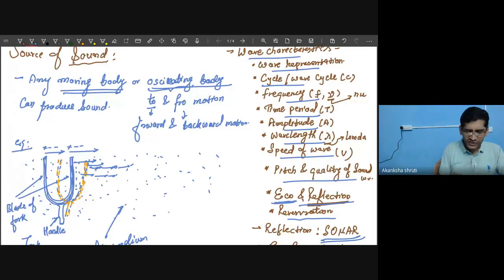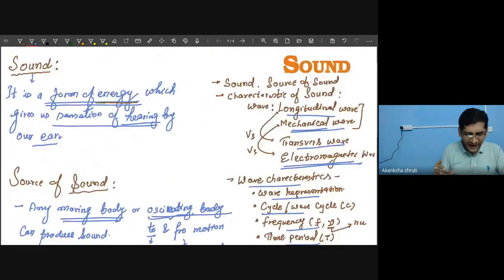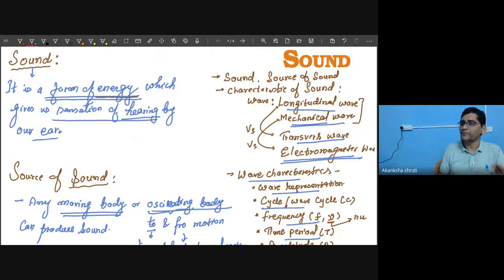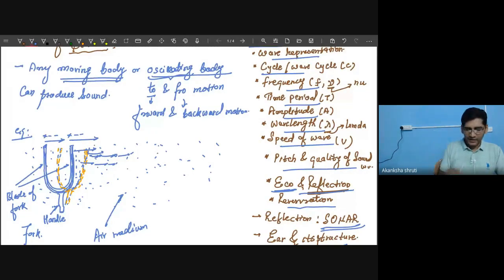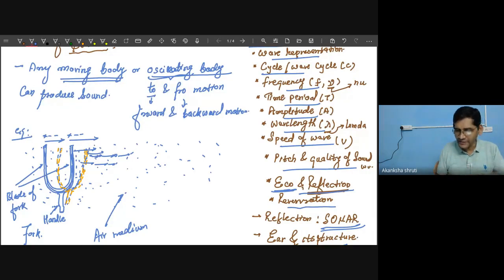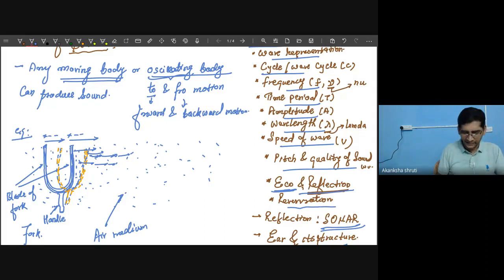This disturbance is called sound. So sound is also defined as a disturbance in the medium. This disturbance flows as a wave. The air particles which were initially in a still position get disturbed or dislocated from their original position when the body starts oscillating — that is called the disturbance. The air particles have started their motion or oscillation because of the energy we are providing to the oscillating body.